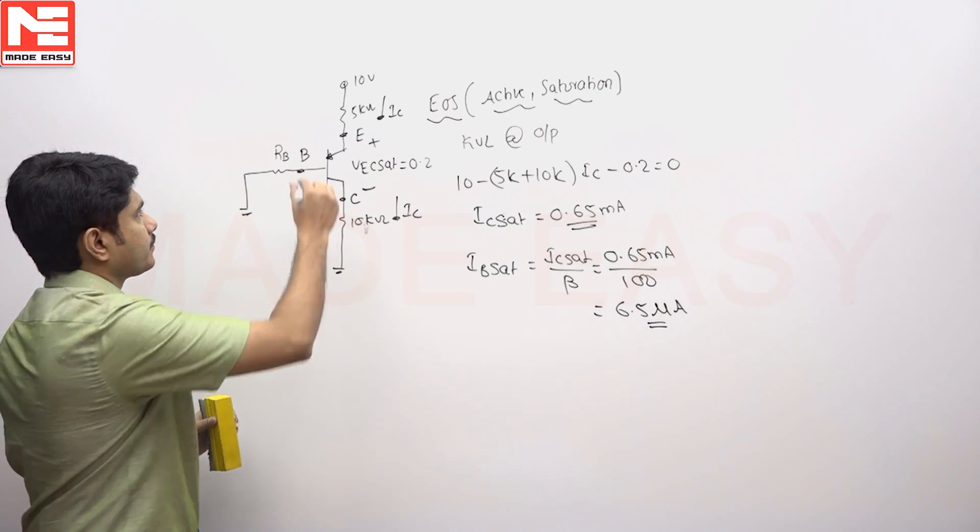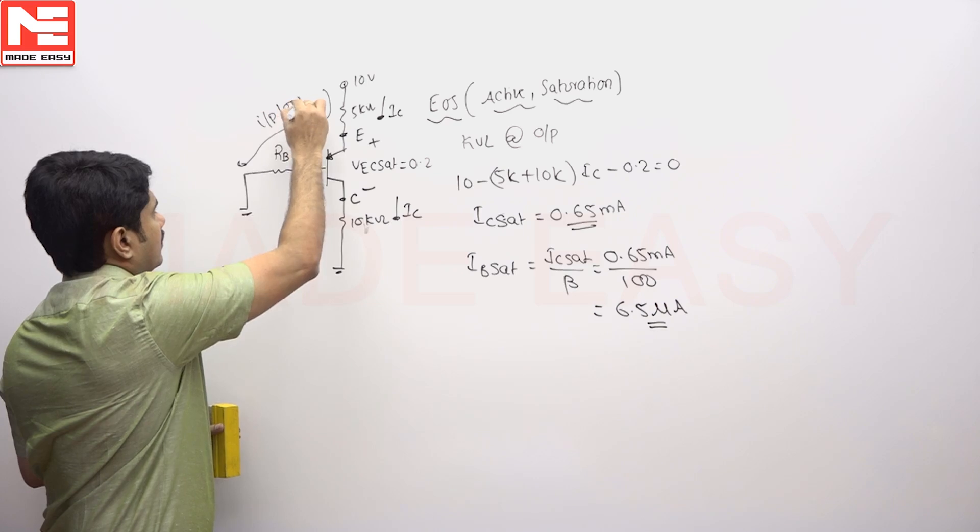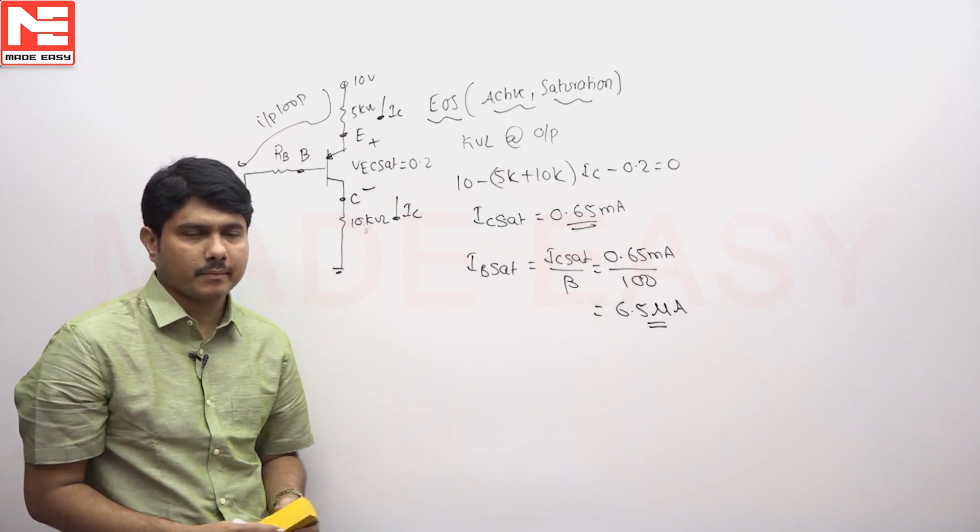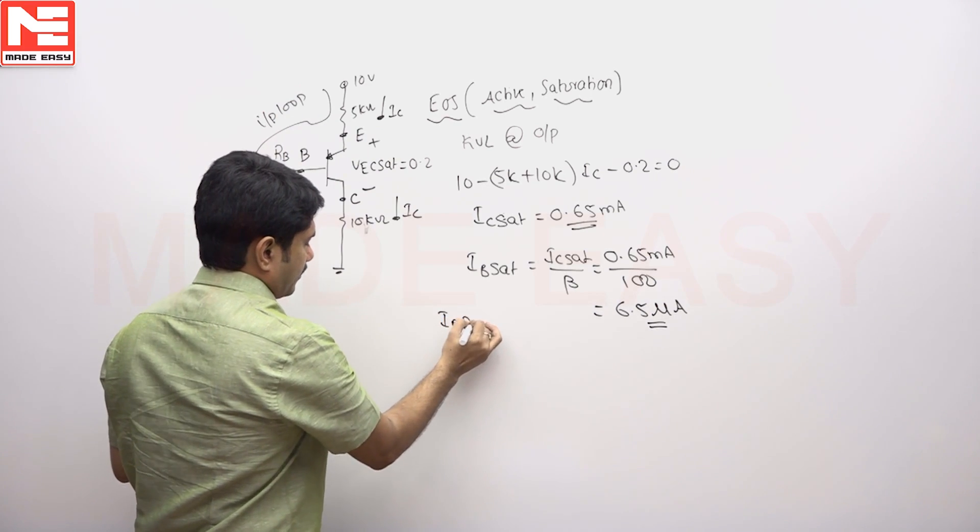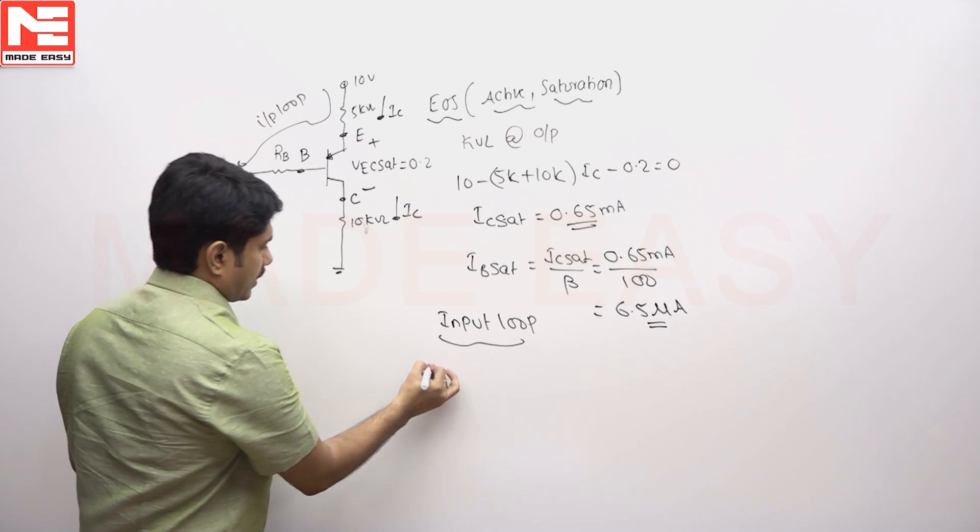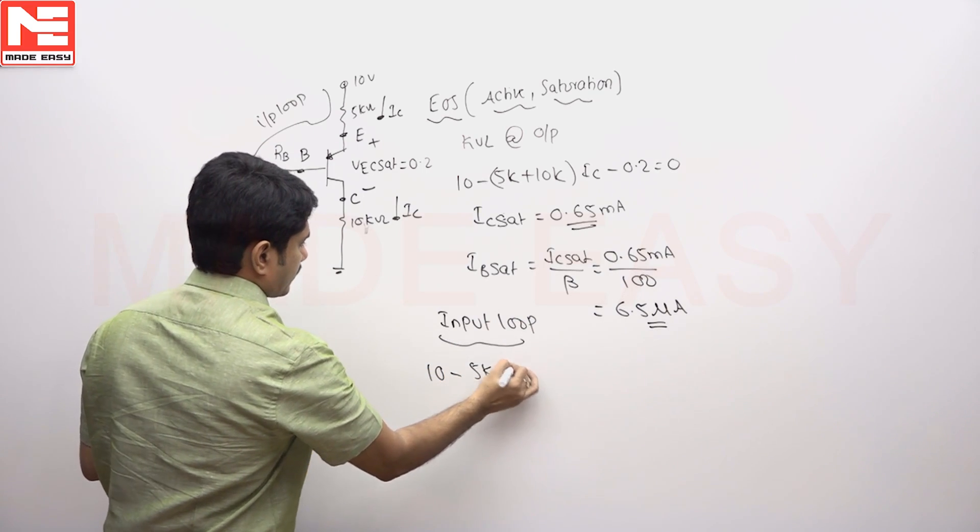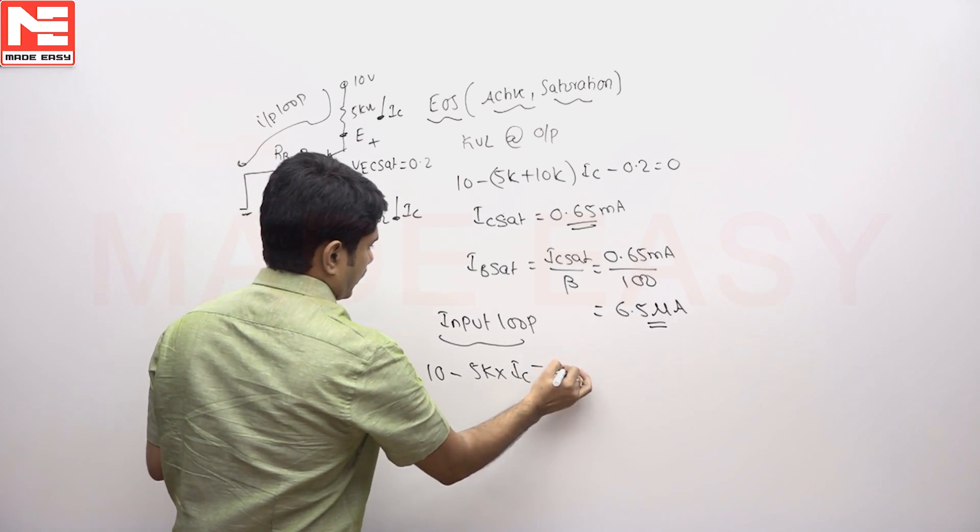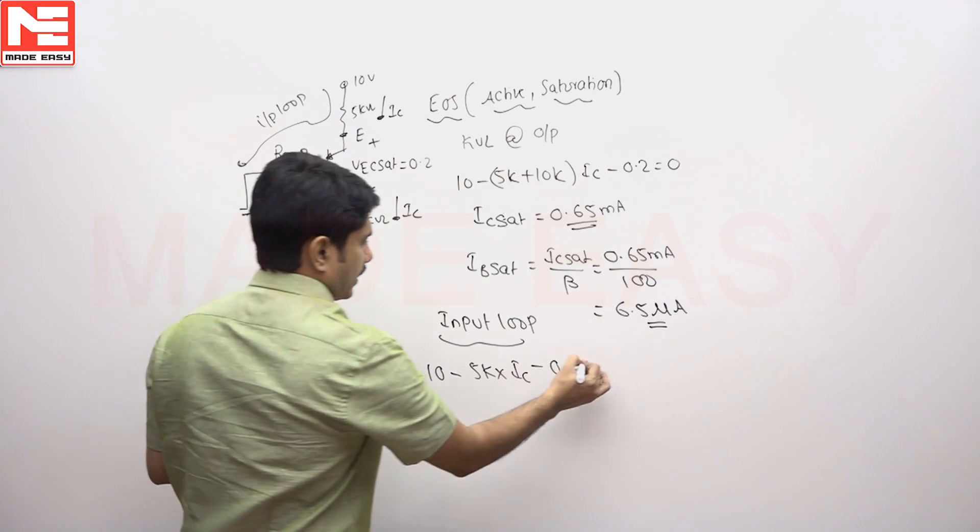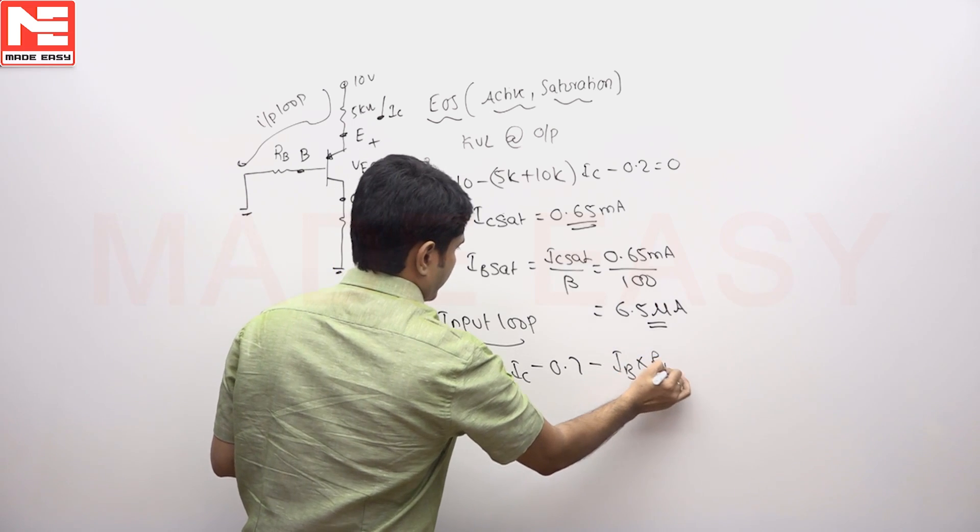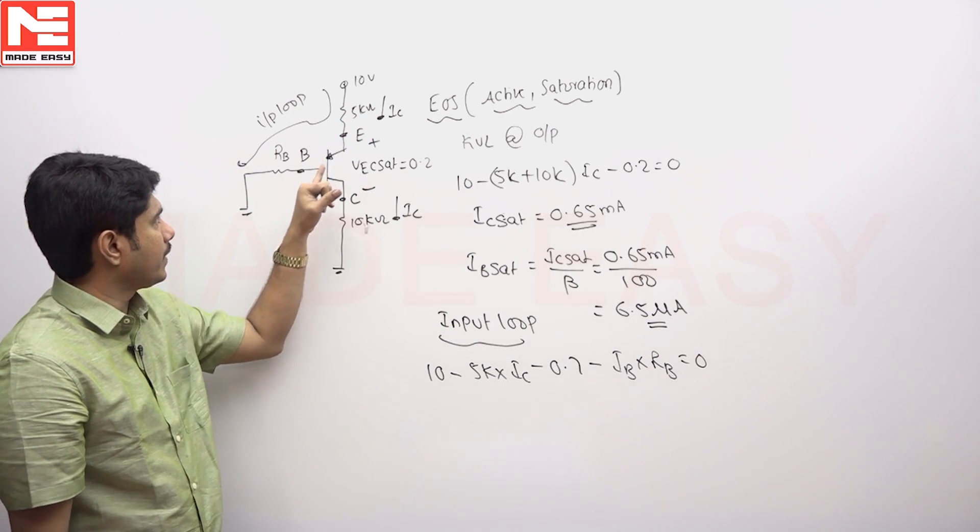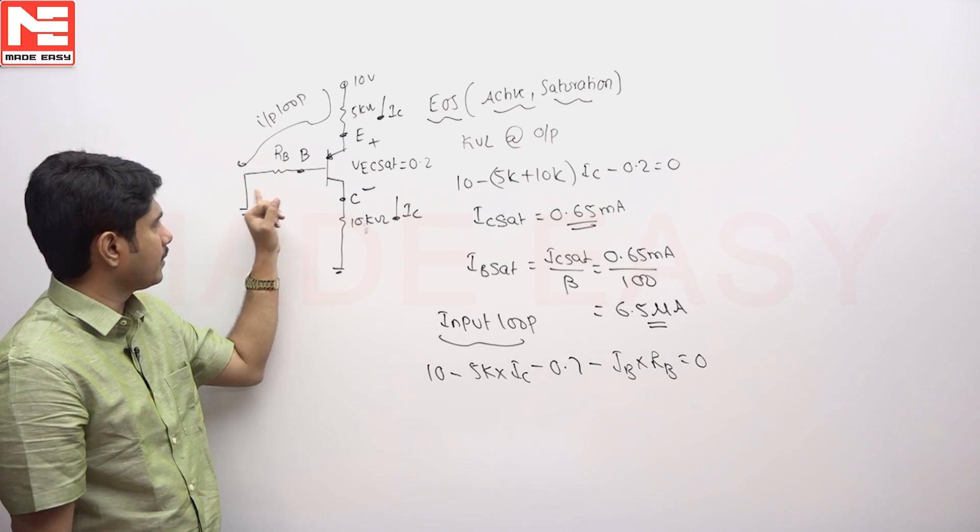Then if you apply the input loop, input loop, then the current is IB you know, IC you know, so RB you can find out by using the input loop equation. Input loop is equal to what is the loop equation for this is 10 minus 5K into IC is here, cut in voltage and minus of IB into RB is equal to 0. This is the way equation I have written. 10 minus 5K into IC 0.7 minus IB into RB is equal to 0.